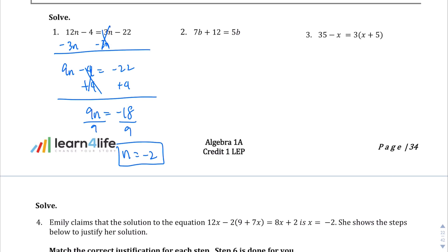Question number 2. 7b plus 12 equals 5b. Let's move the smaller variable over. 5b minus 5b. When we do that, this goes away. 2b plus 12 equals 0, right? You might be wary about moving that 5b first, but don't be. It just becomes 0. 2b plus 12 equals 0. Then we subtract 12 from both sides. We're left with 2b equals negative 12. Divide both sides by 2. We're left with b equals negative 6.